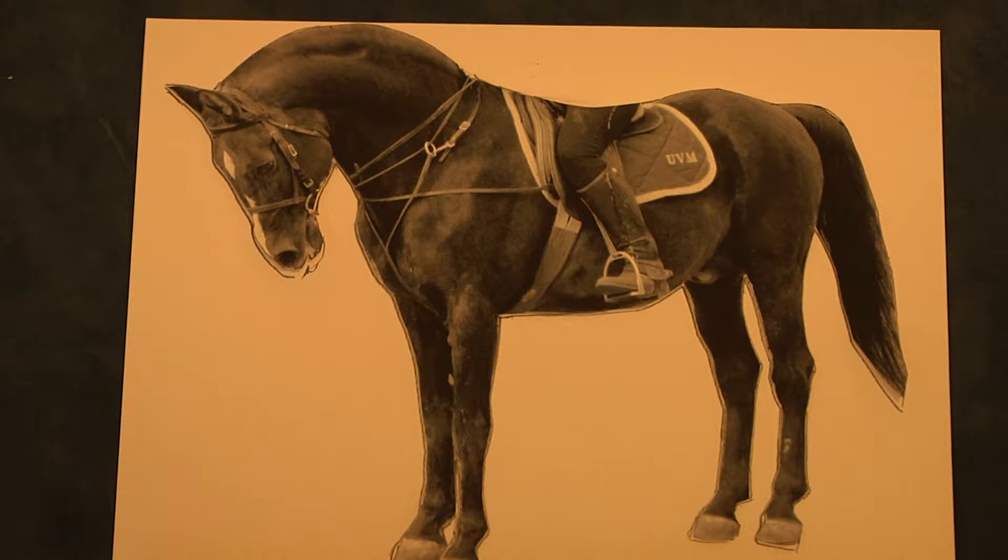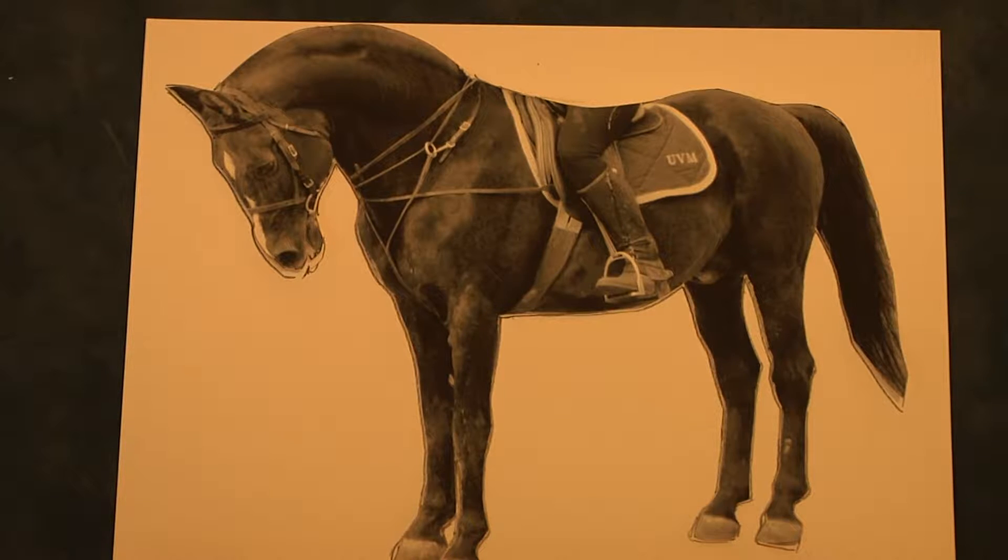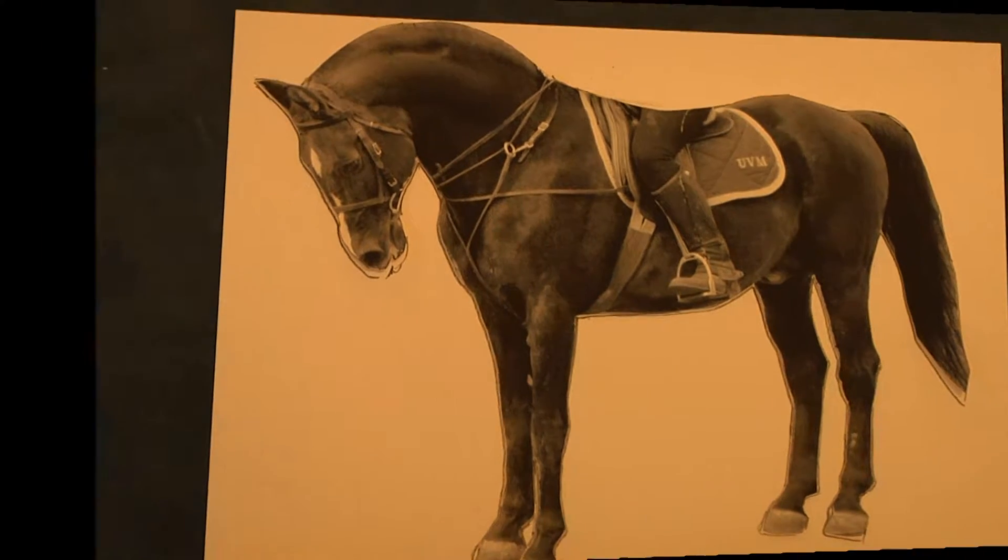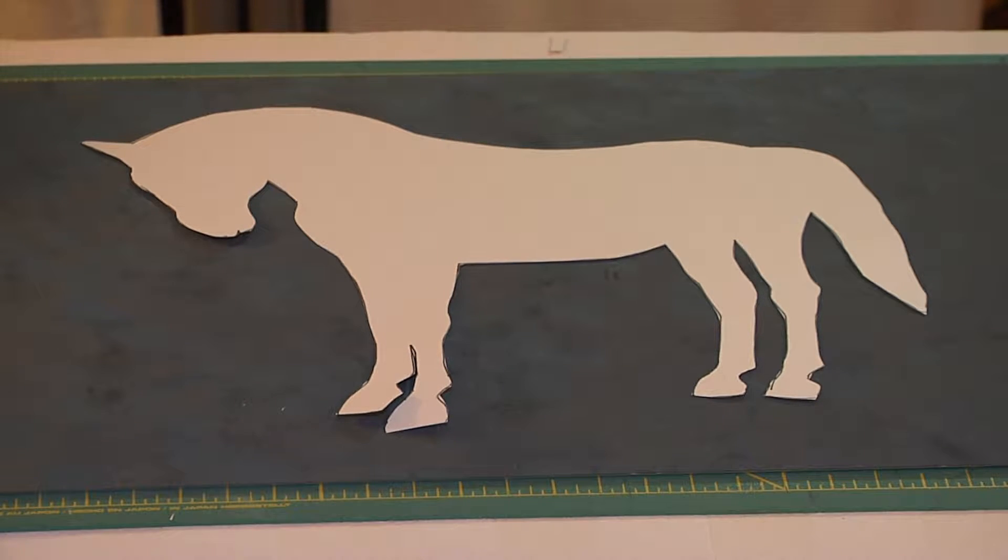The first thing you'll need to do is trace and cut out a form you'd like to make into a mosaic, which in my case is a Morgan horse. If you don't want to cut out your drawing, you don't have to. I prefer to cut mine out so I could trim squares that go outside the lines.